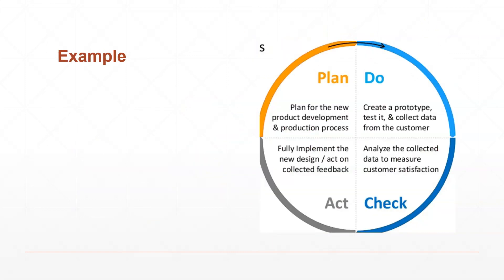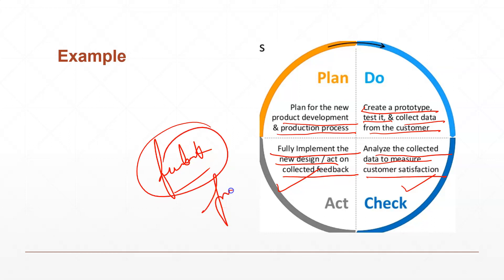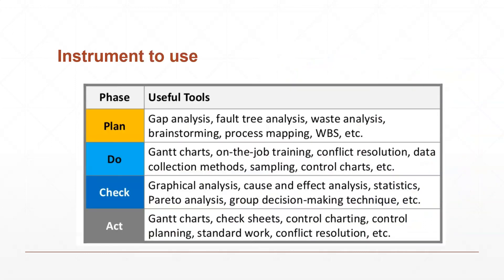You can see an example here. Look at this cycle I created. For instance, at the planning level what will we do? We are planning to implement a new product development and production process. We will plan a new product development and production process. For this, what will we do? We'll create a prototype, test it and collect data from the customer. We will create a prototype of that product, then test it. After testing, we will give it to the customer and collect data from the customer. This will be our Do stage. After that, what we'll do? We analyze the collected data to measure the customer satisfaction. Then we will check whether the data the customer gave us shows customer satisfaction or not, what issues are there in the product. If everything is correct, then finally you will fully implement the new design and act on collected feedback. You will work according to whatever feedback you get. Plus, the product or process you made, you will fully execute it. This is one example from which you can understand how the four stages work. As I told you before, Do and Check can repeat multiple times, no problem.